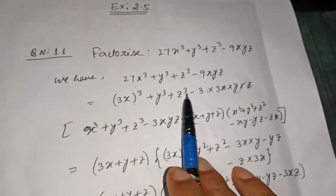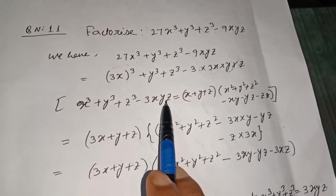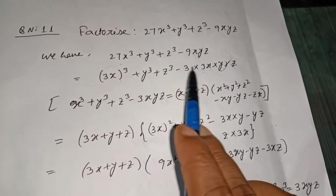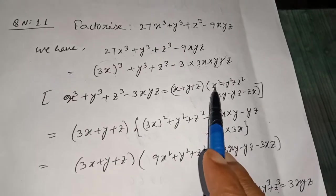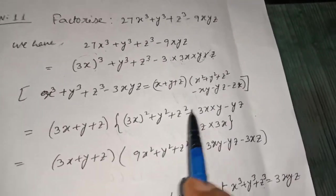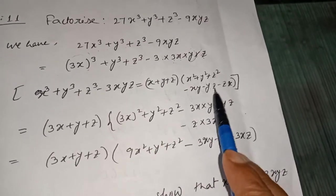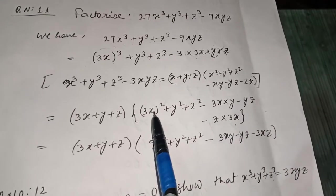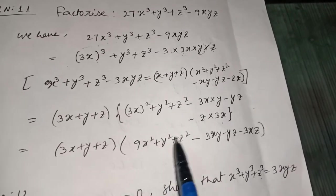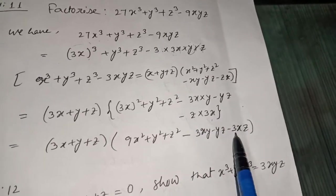So for x³ + y³ + z³ - 3xyz, where x is 3x, we write: (3x + y + z)((3x)² + y² + z² - (3x)(y) - (y)(z) - (z)(3x)). Simplifying: (3x + y + z)(9x² + y² + z² - 3xy - yz - 3xz). This is the final result.